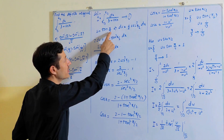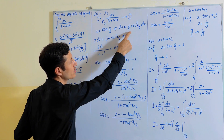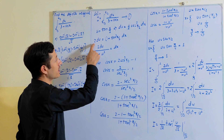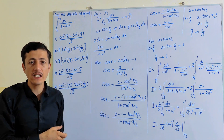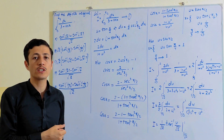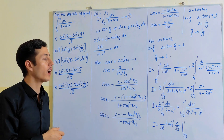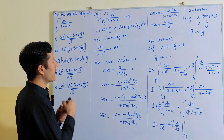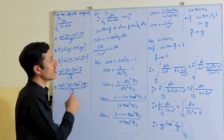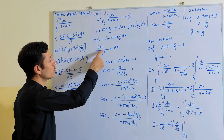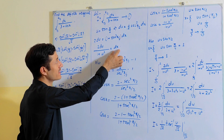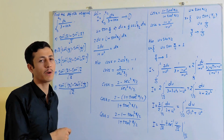Here the substitution u = tan(x/2). By taking differentiation, du = (1/2) sec²(x/2) dx. Moving the 2 to the other side gives 2 du = (1 + tan²(x/2)) dx, using the identity sec²θ = 1 + tan²θ. Replacing u = tan(x/2), it becomes dx = 2 du / (1 + u²).